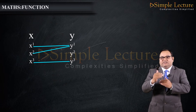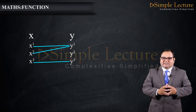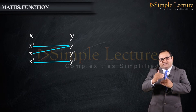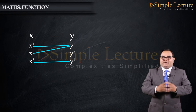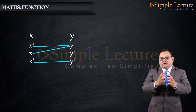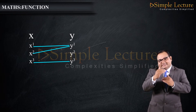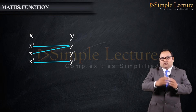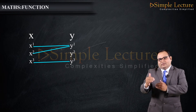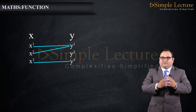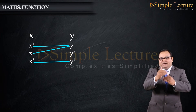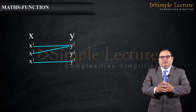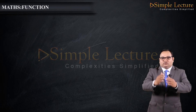To summarize the definition: for every element in set X we should have one image in Y, but for one element we cannot have two images in Y.